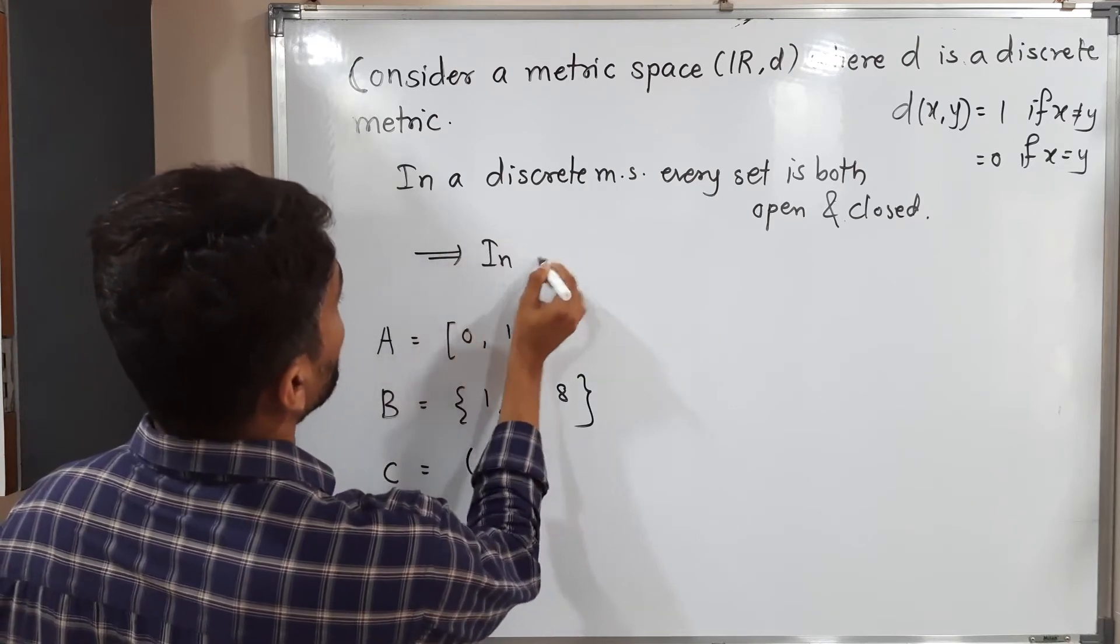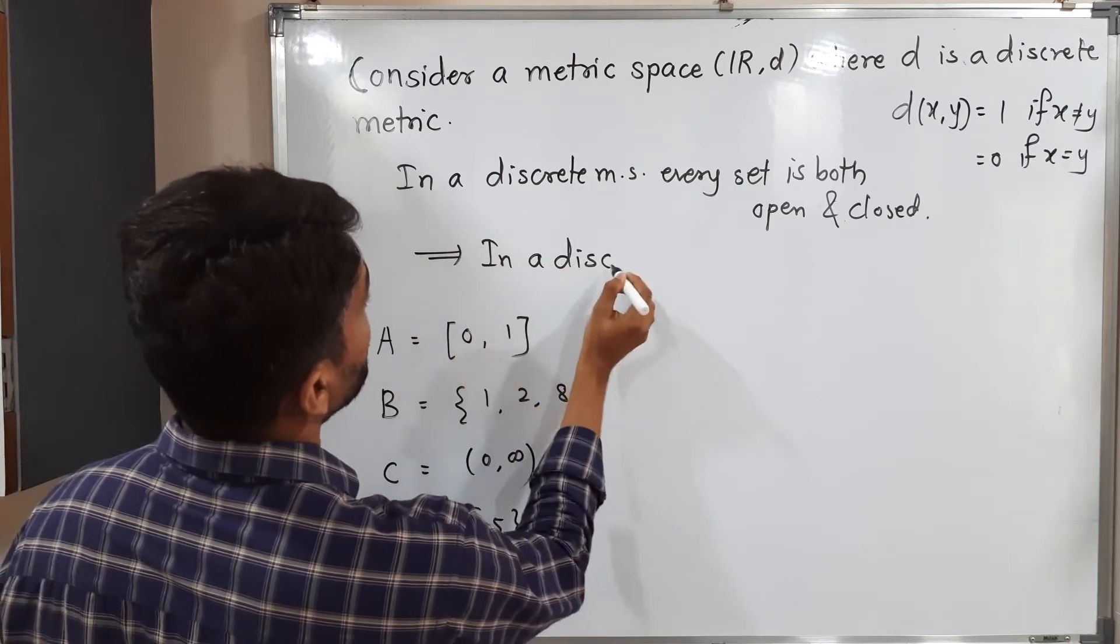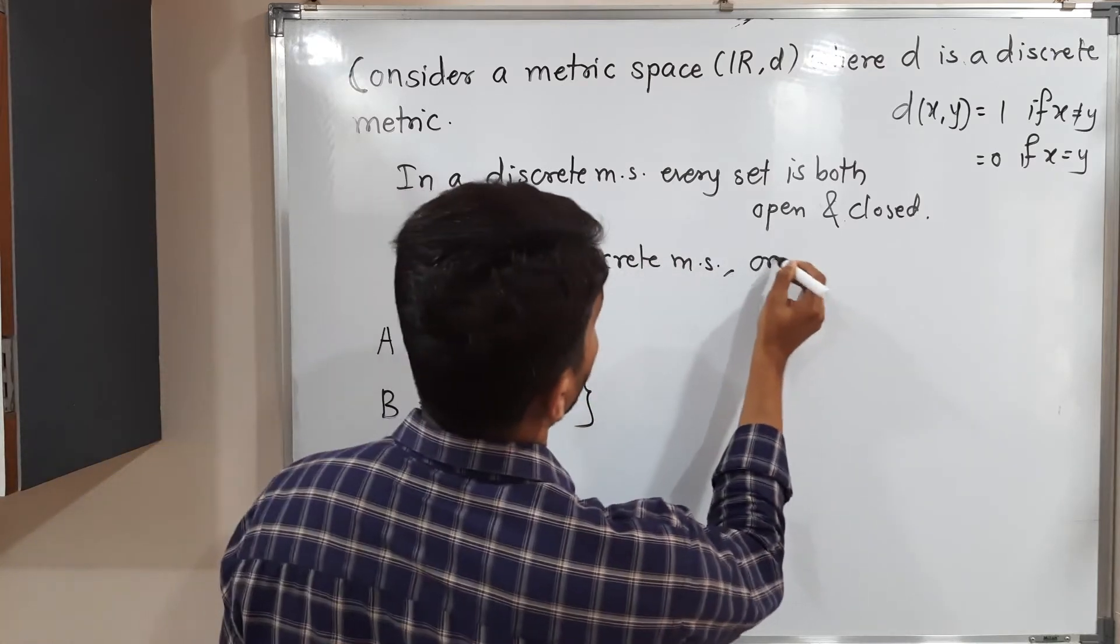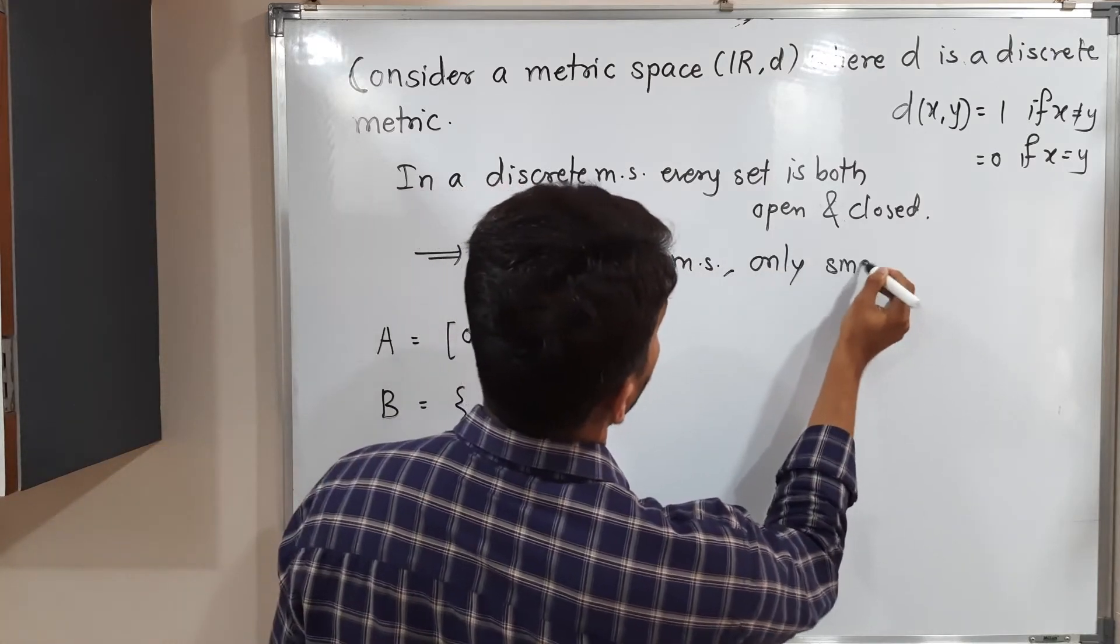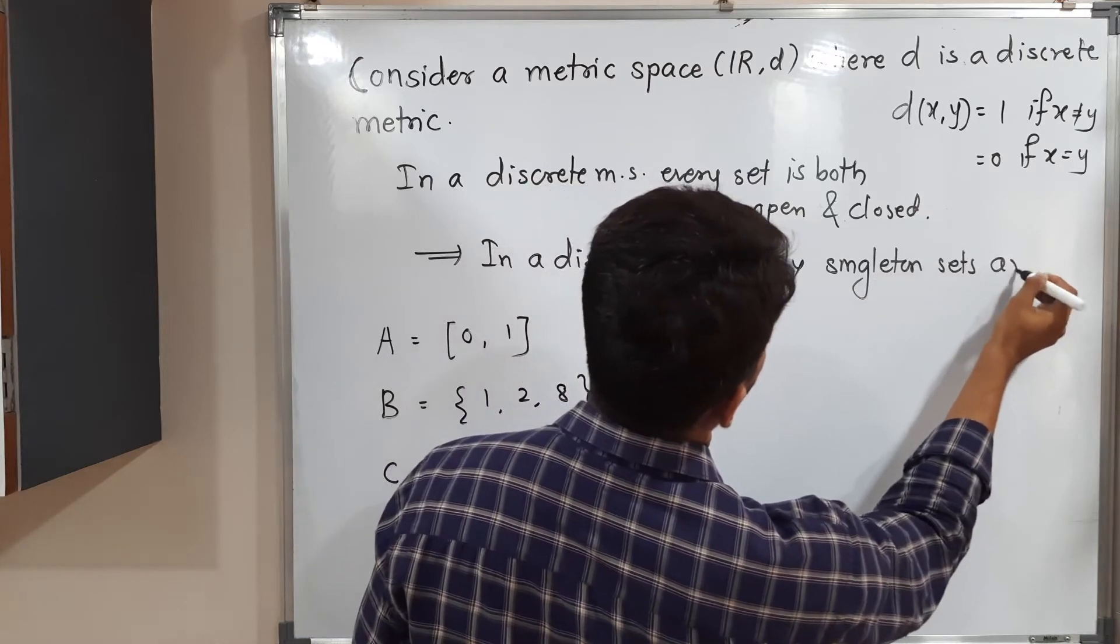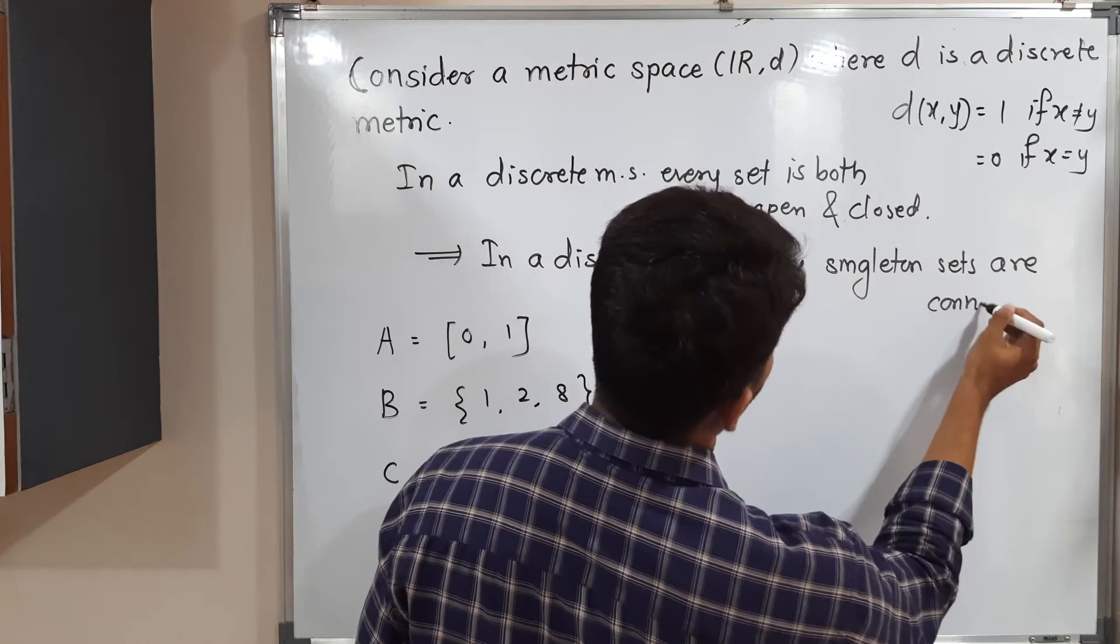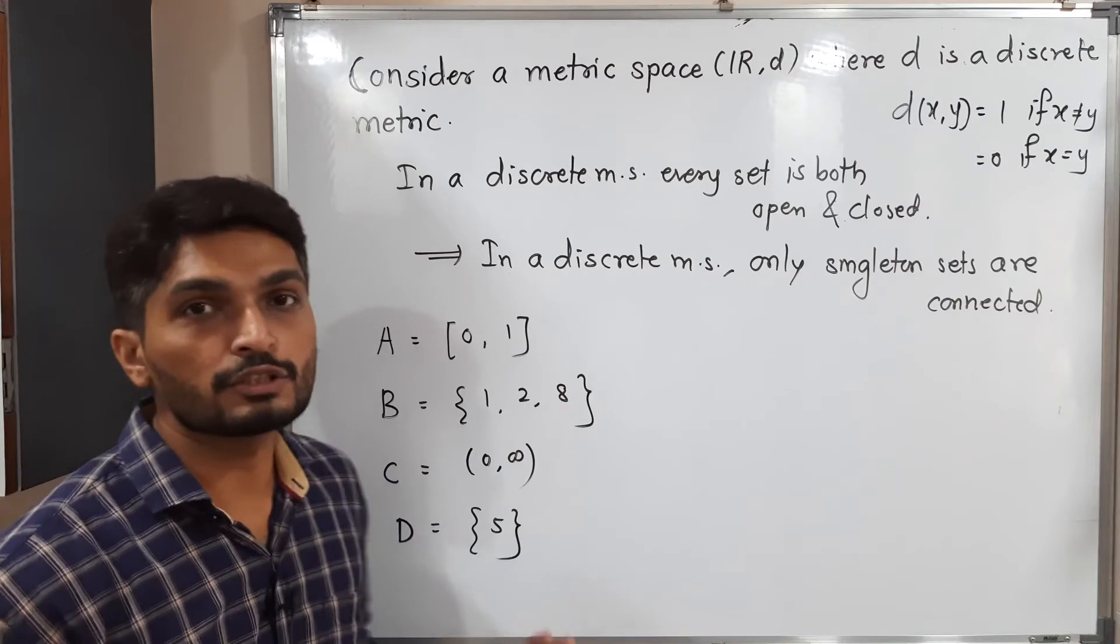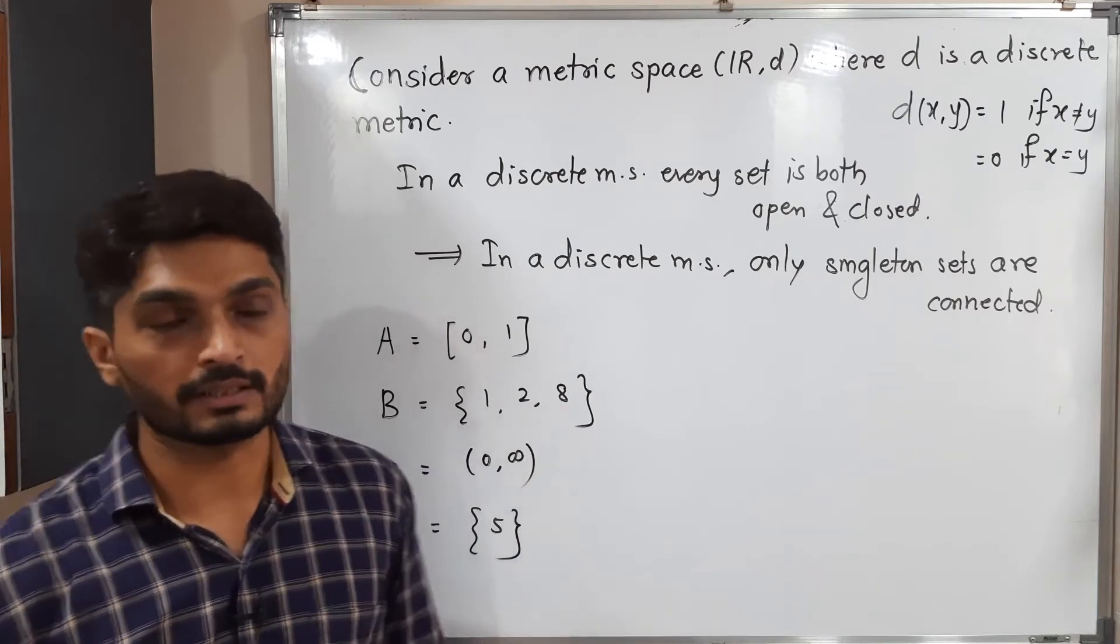So this implies: in a discrete metric space, only singleton sets are connected, and remaining are disconnected. With the help of this result, we can easily judge these sets are connected or disconnected.